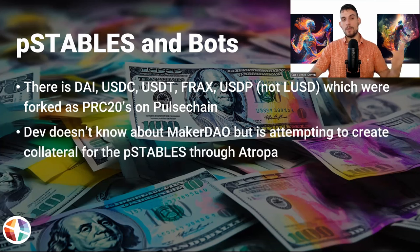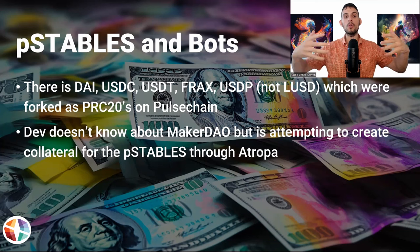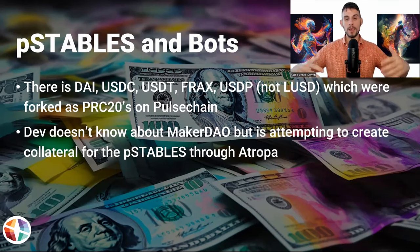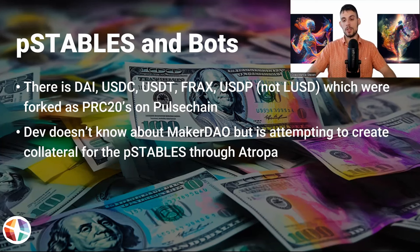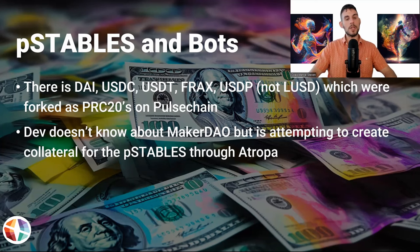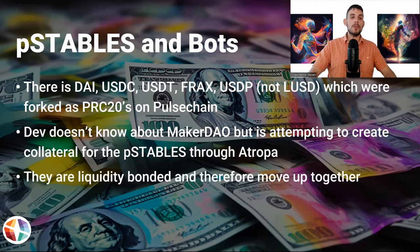The dev doesn't actually know about MakerDAO — where you get DAI from on Ethereum. The Atropa ecosystem is actually attempting to create collateral for the P-stables through a whole web of hundreds of tokens. Through this web of liquidity, it's attempting to create the collateral backing for the P-stables. Whether Atropa can peg it or MakerDAO pegs it, no one knows. All these P-stables are liquidity bonded and therefore they move up together.